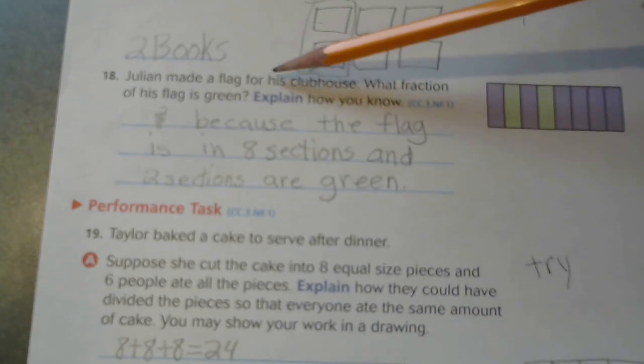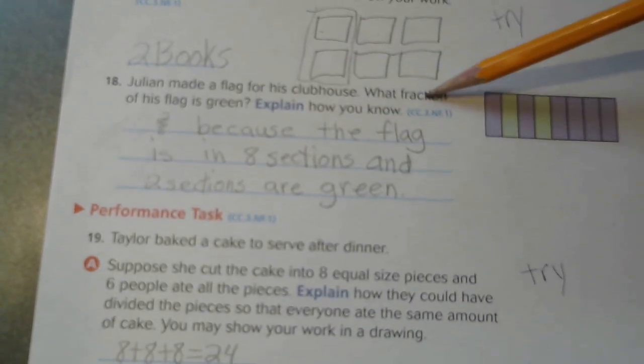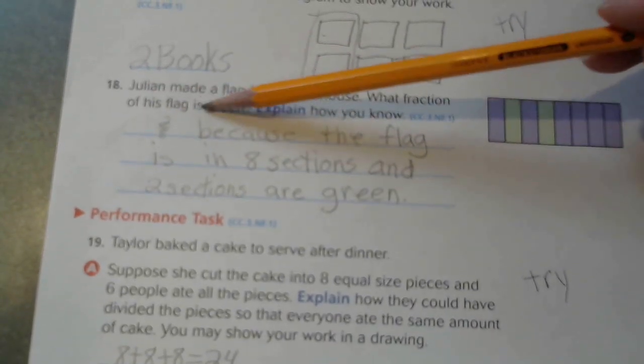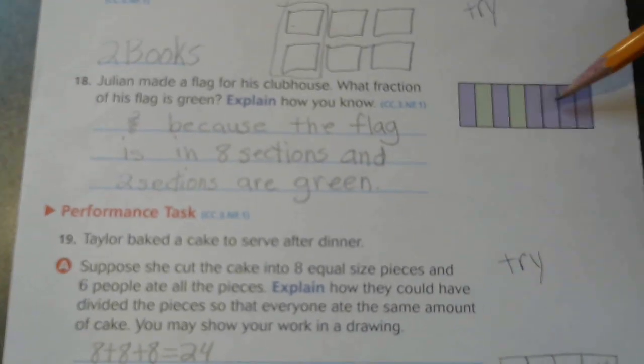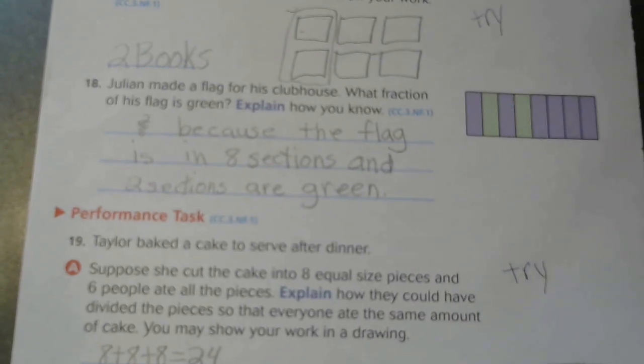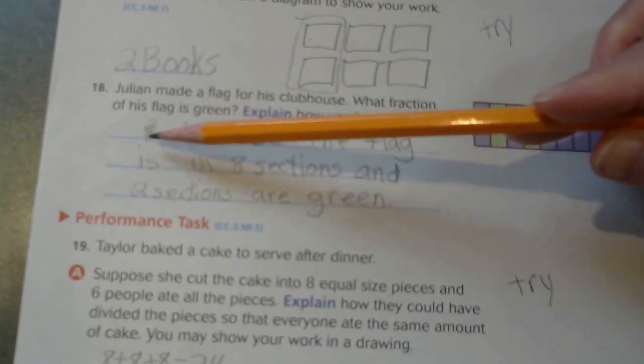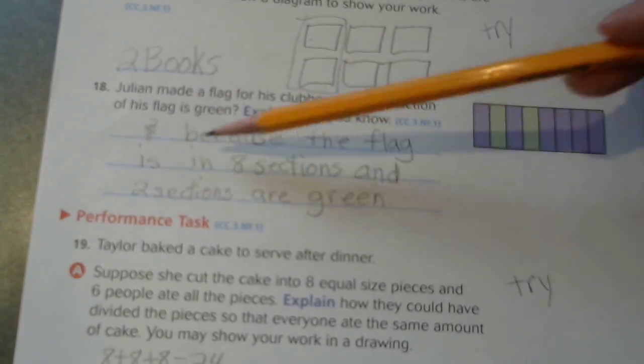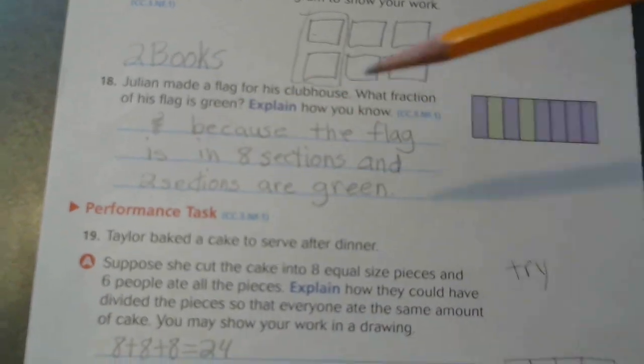Julian made a flag for his clubhouse. What fraction of his flag is green? Well, if you count the sections in Julian's flag, there are eight and two sections are green. So two-eighths because the flag is in eight sections and two sections are green.